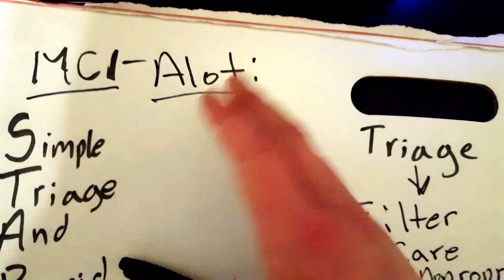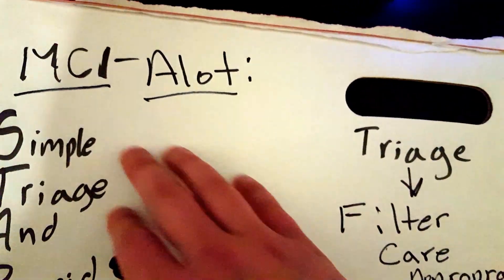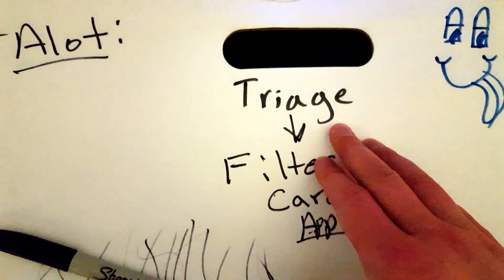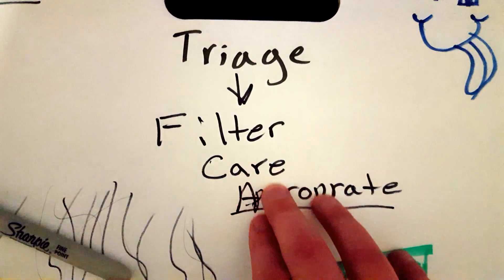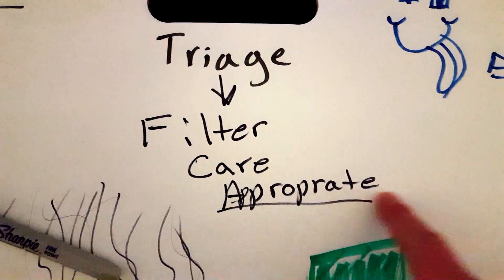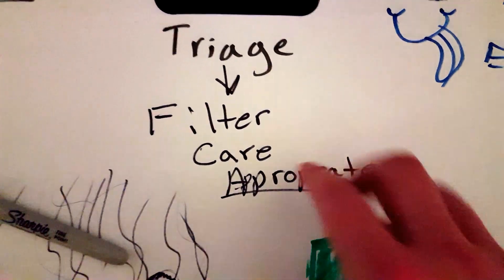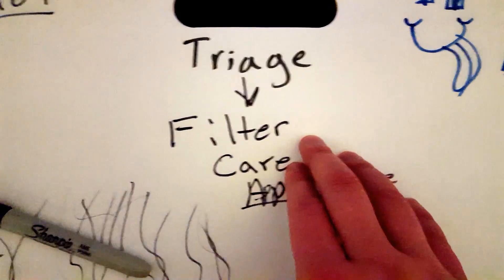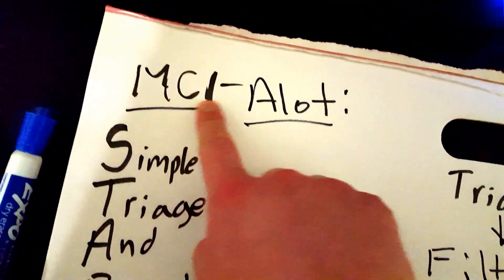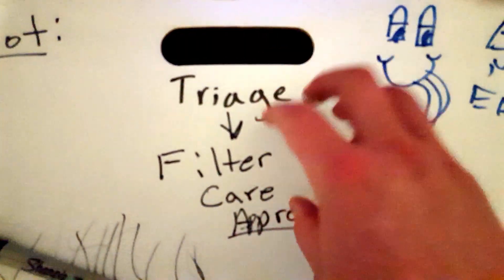Usually when we think of an MCI we're thinking about a bus crash or an airplane crash. We use triage for MCIs. Triage is just a way of filtering out the patients to give the right care or the appropriate care per patient.